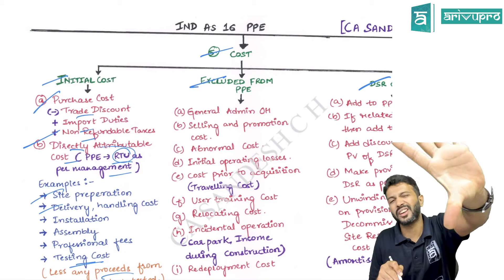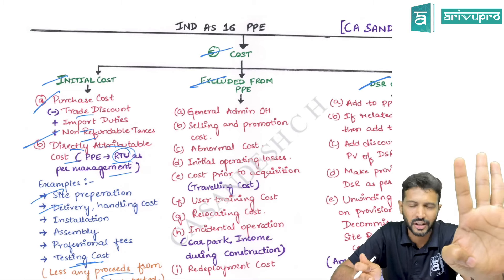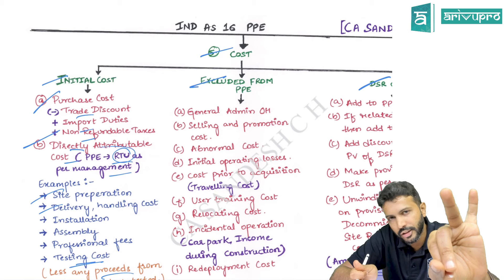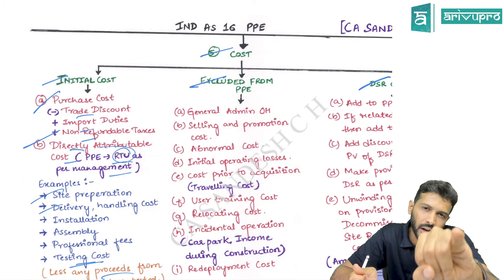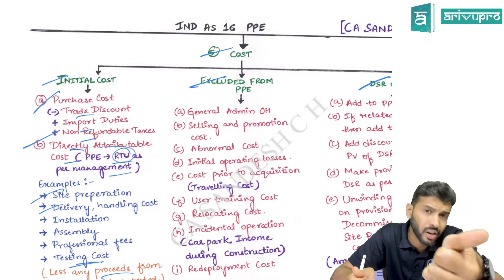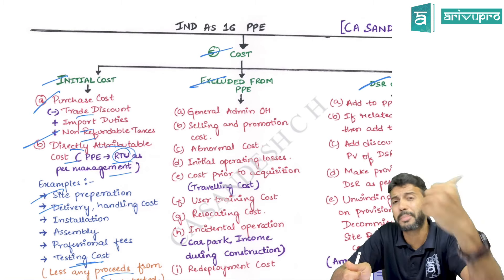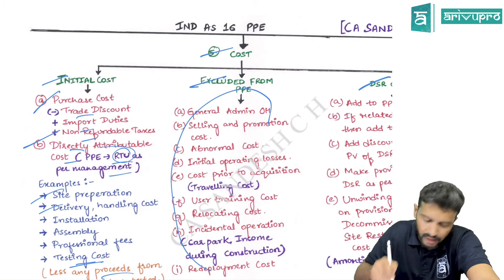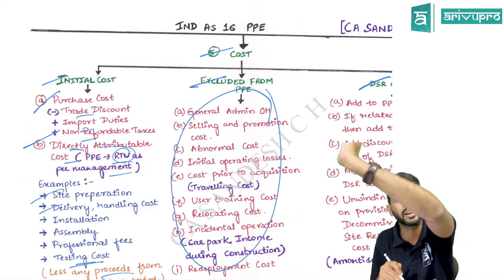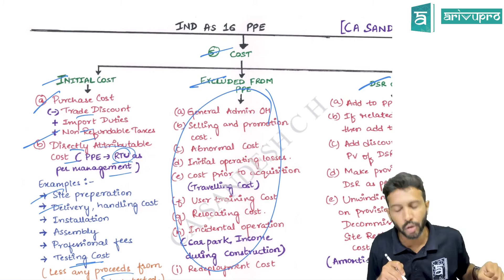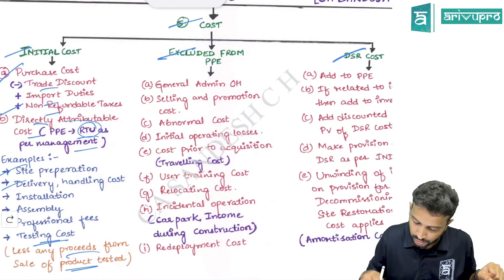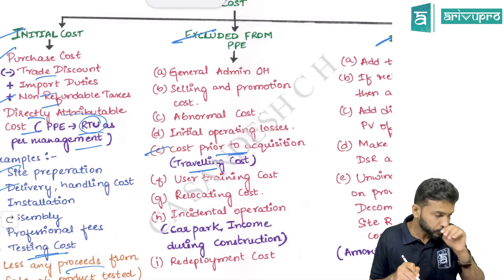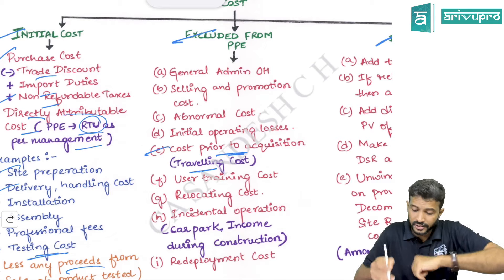Cost exclusions include general administrative overheads, selling and distribution overheads, staff training costs, initial operating costs, relocation costs, reorganization costs, marketing and promotion costs, and traveling costs — all excluded from the cost of PPE and transferred directly to P&L.